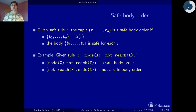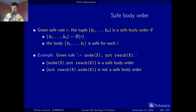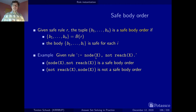Let's look at an example. Let's reconsider the integrity constraint that all nodes must be reachable from our Hamiltonian cycle example. This is the integrity constraint, and keep in mind this is a rule so the body is regarded as a set. We want to take this set and put it into a sequence such that each prefix is also a safe set. We have two candidates because we have just two body literals. In the first one, we put the positive body literal first — this is a safe body order because x appears in the positive body literal in every prefix. When we reverse them, this does not give a safe body order because the prefix with only the negative literal is not safe, since x does not appear in a positive body literal.